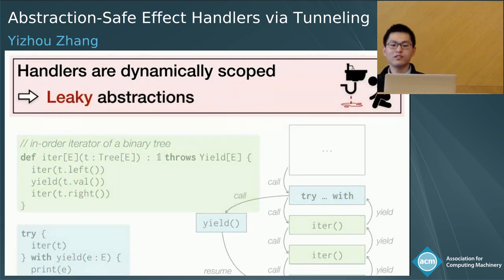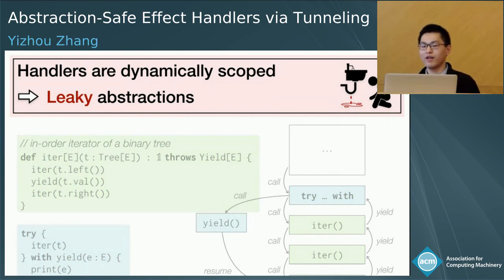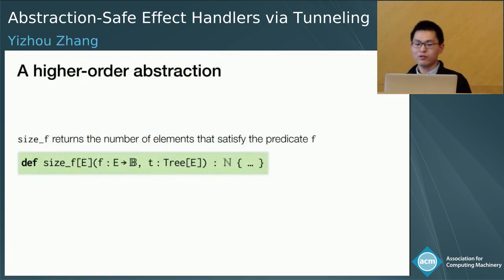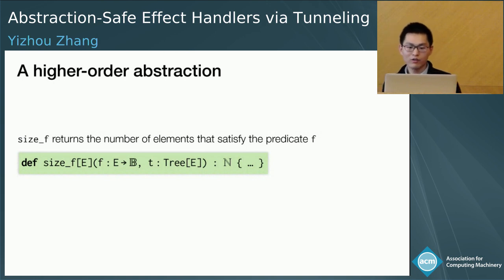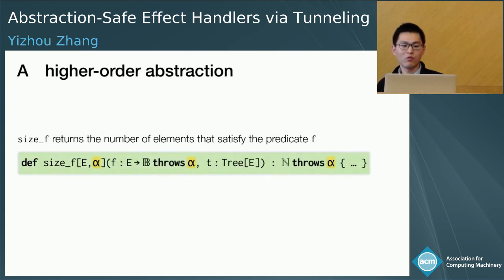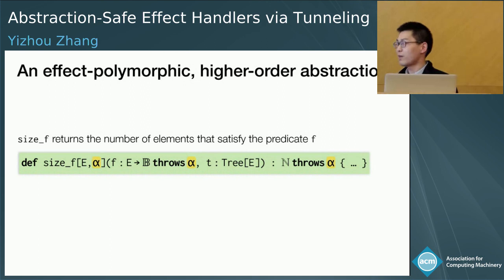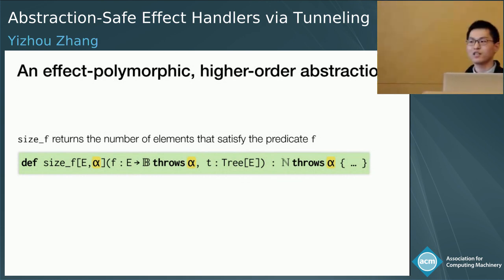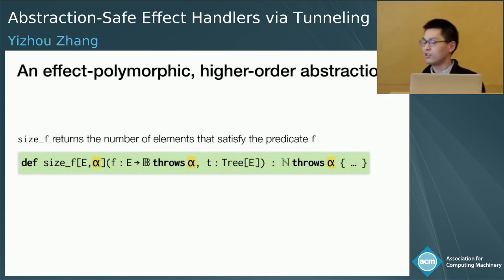It is precisely this dynamic scoping of handlers that can break abstraction. Consider a higher-order abstraction called size_F that returns the number of elements satisfying some predicate F in a binary tree. In general, the computation embodied in the functional argument F may be effectful, so we introduce an effect variable alpha to abstract over the possible effects F might raise. Because size_F must apply F, static checking requires including alpha in the effects of size_F.